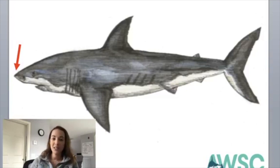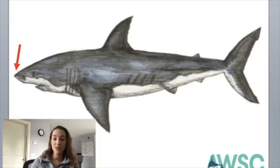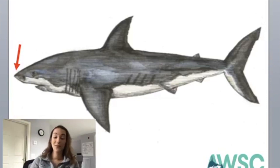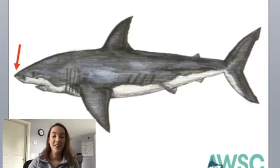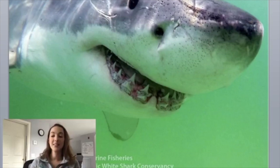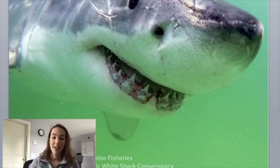Does anyone know what that special sixth sense is? It has something to do with their nose, as you can see with the arrow on screen. If you are saying ampullae of Lorenzini, you are correct. The ampullae of Lorenzini is our shark's sixth sense — the sense of electro reception.